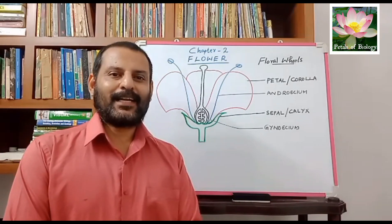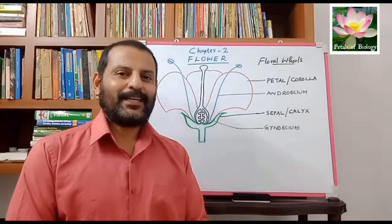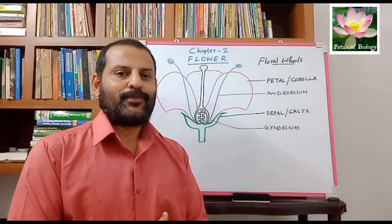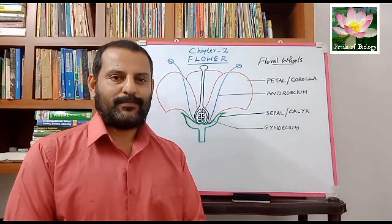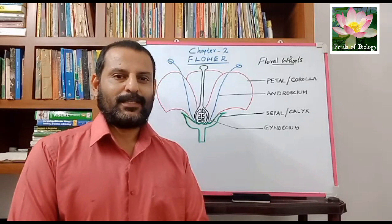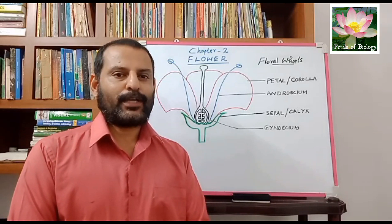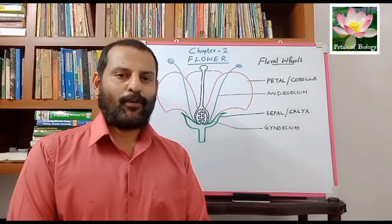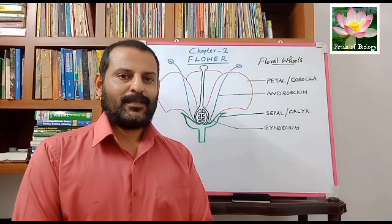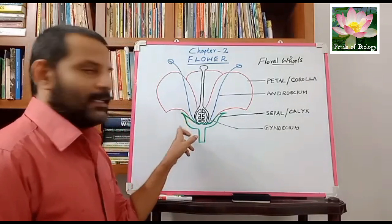Hi friends, once again welcome back to Happy Learning in Petals of Biology. Today we are going to discuss the structure of a flower — the main parts of a flower. A flower is a reproductive part of a plant, playing the main role in reproduction, and helps in the formation of fruits as well as seeds.